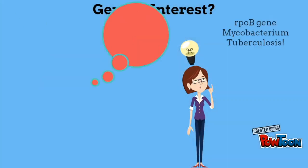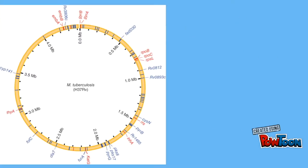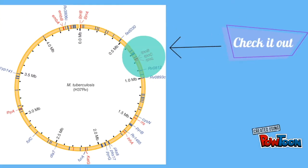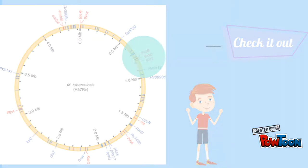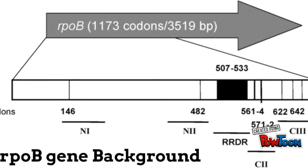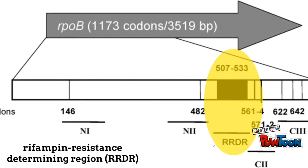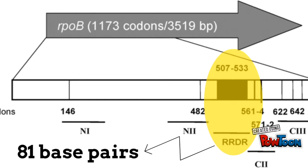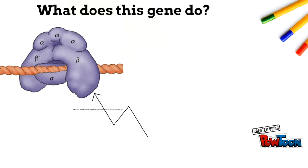The gene we are targeting is the RPOB gene in Mycobacterium tuberculosis. This gene specifically affects antibiotic resistance in tuberculosis due to the amount of point mutations that happen in this region. Shown here is the RPOB gene in Mycobacterium tuberculosis. The rifampin resistance determining region, or RRDR, is where mutations typically occur. This region consists of 81 base pairs and runs through codons 507 to 533.